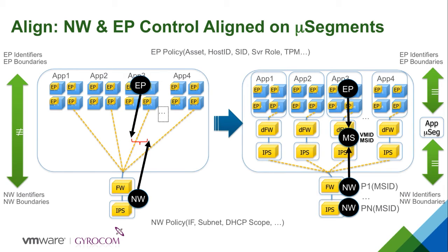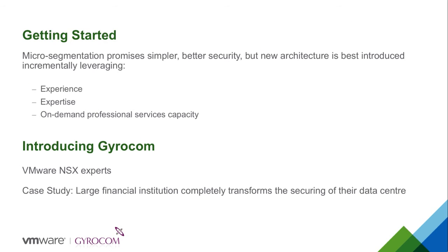How do we get started taking advantage of what micro-segmentation promises in terms of simpler and more effective security? Getting started is best handled incrementally: pick one application or service at a time, understand the boundary that should exist around it, what communications should be allowed in and out, and what endpoint protection posture should be applied. Doing this is best accomplished by leveraging the expertise of professional services organizations who have done it before. I'd like to introduce Graham Brown, Managing Director of Gyricom.